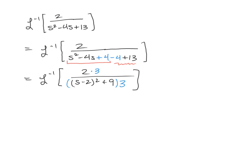And when we do this, that 2 and that 3 will come out front as a coefficient. So we'll have 2 thirds in front of our inverse transform of 3 over s minus 2 squared plus 9.